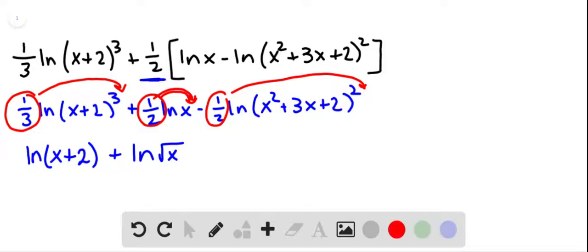And for the third one, we are bringing the 1 half up, making it a power and multiplying it by the power of 2 that was already there. 1 half times 2 is 1. So we have minus the natural log of x squared plus 3x plus 2.